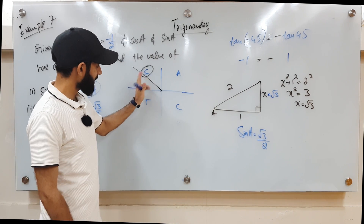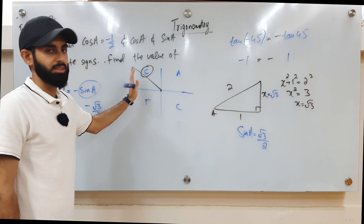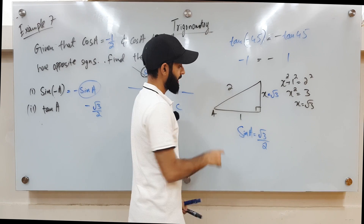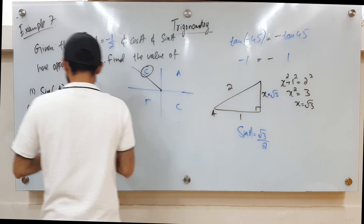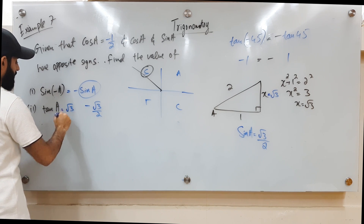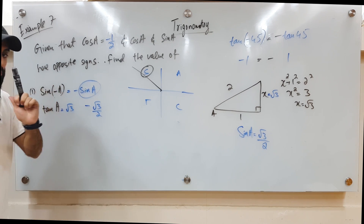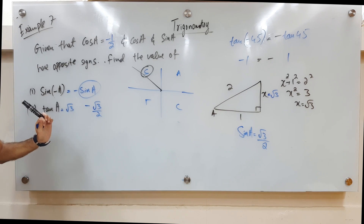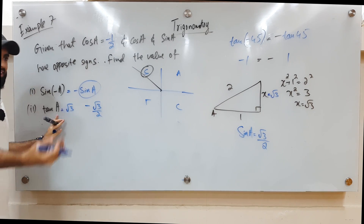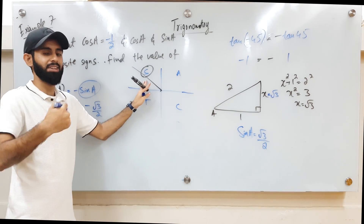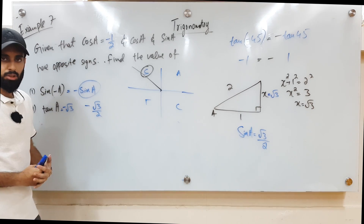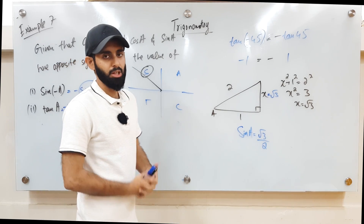Now for tan: we are in the second quadrant, so tan will be negative. Tan equals opposite over adjacent, which is √3 over 1, so the value is √3. But since we're in the second quadrant, tan of this angle is negative, so tan a equals negative √3.